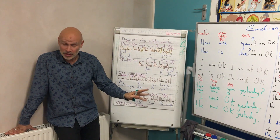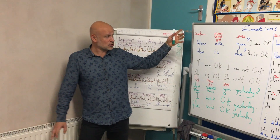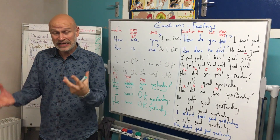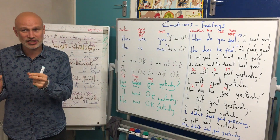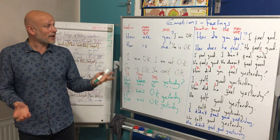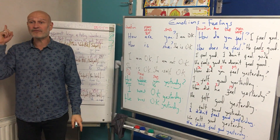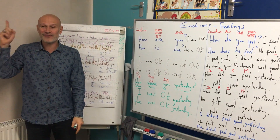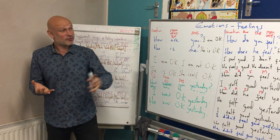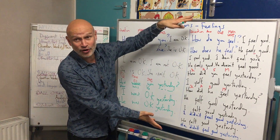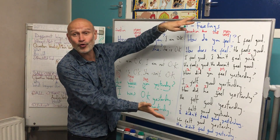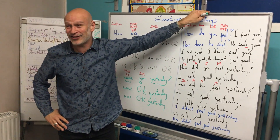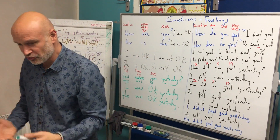The verb 'to be' is quite simple. The problem comes when we need to use present simple or past simple with other verbs — this is where things get a little more challenging. The verb 'to be' uses one structure, but present simple and past simple with all other verbs require a different structure. That's what we really need to learn.